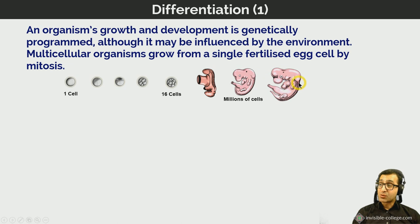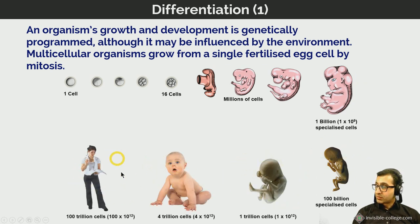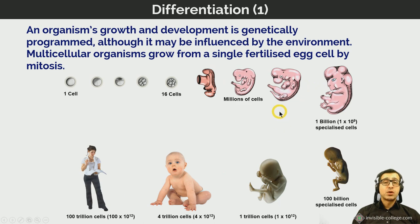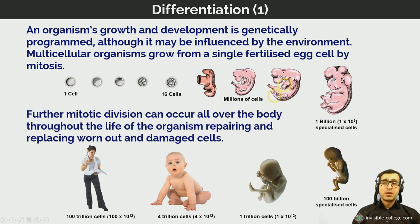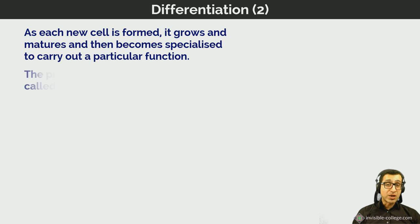As the fetus enlarges — a process also driven by mitosis in all specialized tissues such as the spinal cord and bones — differentiation is occurring. The process by which cells become specialized to perform particular functions is called differentiation. As each new cell is formed, it grows, matures, and becomes specialized. It is important not to confuse differentiation — the process by which cells become specialized — with specialization, which refers to the unique structural features that make a cell well adapted to perform its specific functions.